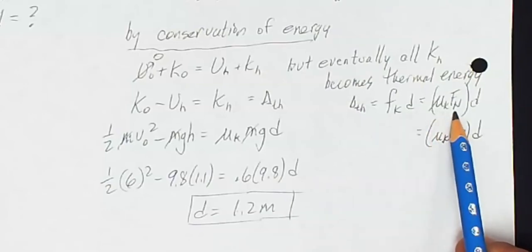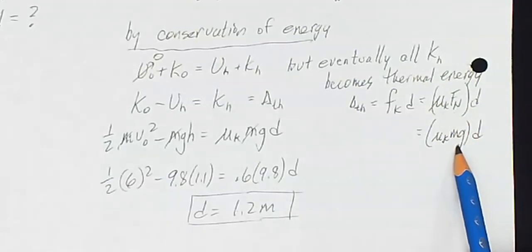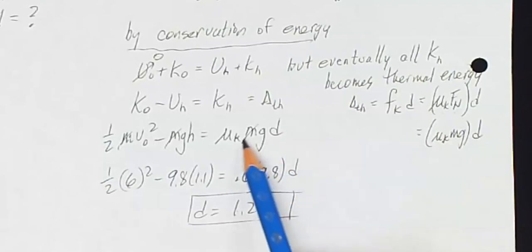Fk is mu k times the normal force. And on a horizontal surface, as is often the case, the normal force is equal to the weight in the absence of other vertical forces. So now I can replace delta thermal with mu k m g d. So that's what I've done here.